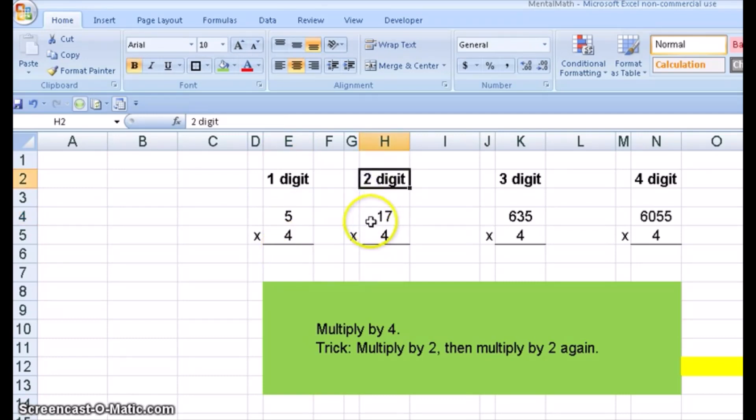Moving on to the two digit. 17 times two is 34. Times two again is 68. So 17 times four, you can look at it and boom, boom, 68. 635 times two, so you get 1,270. And then 1,270 times two is 2,540. 6,055, you get 12,110. 12,110 times two is 24,220. So that's how you can look at these and just get them a little faster.